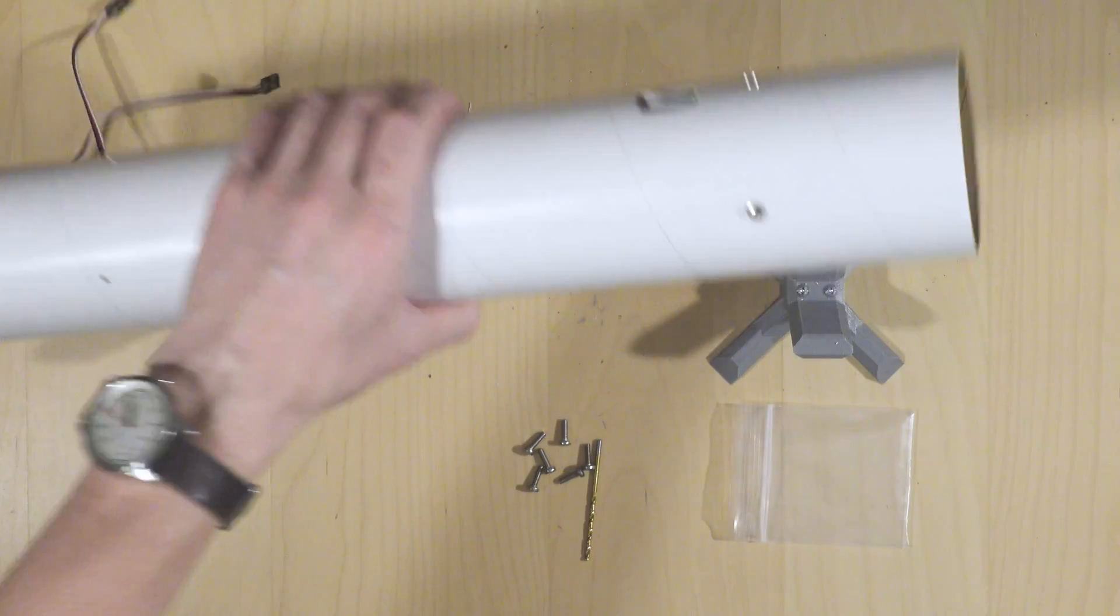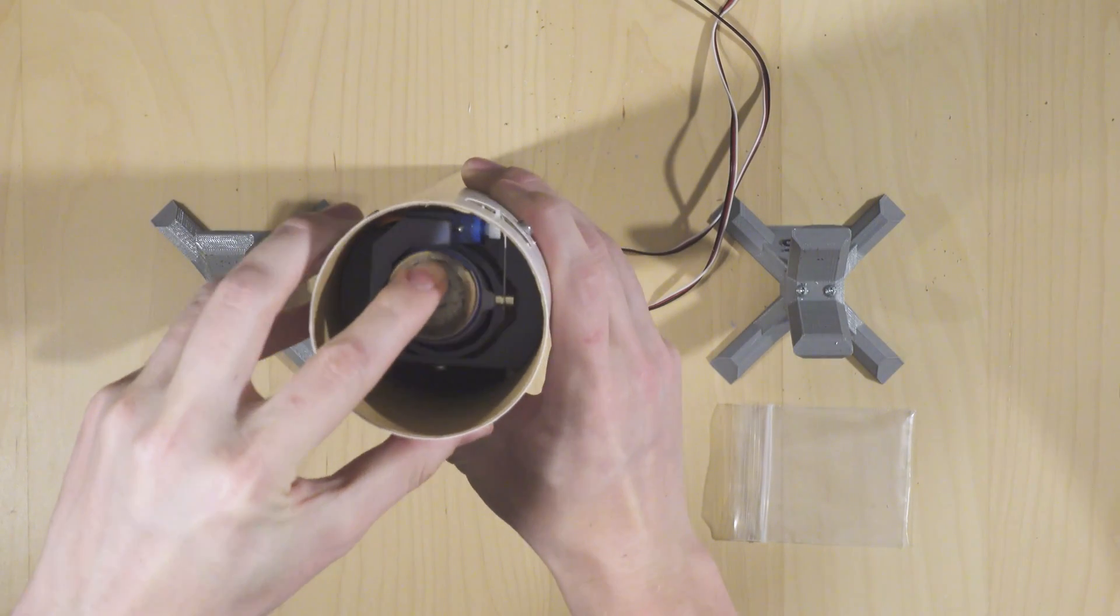Once you're done screwing these in, you can give a quick check to the TVC mount on the bottom. It should move freely about both axes.